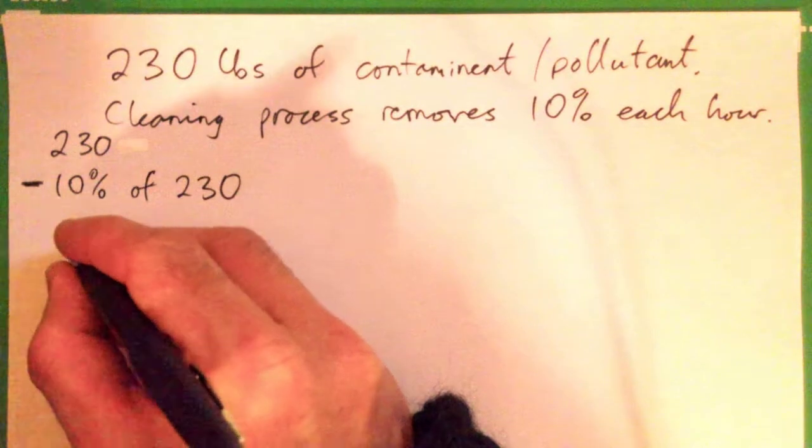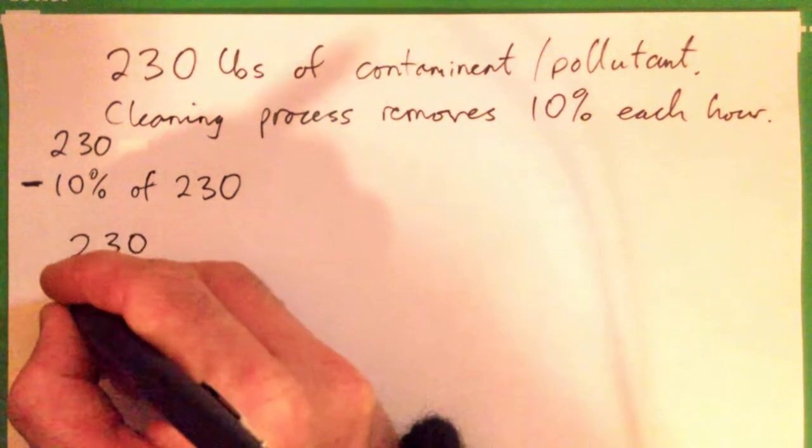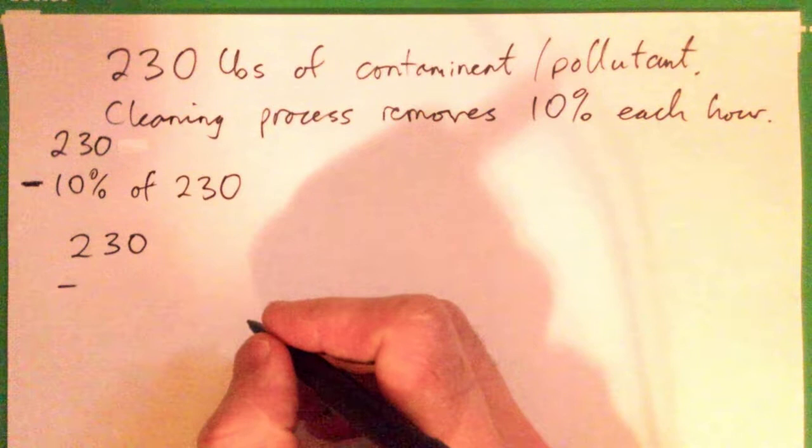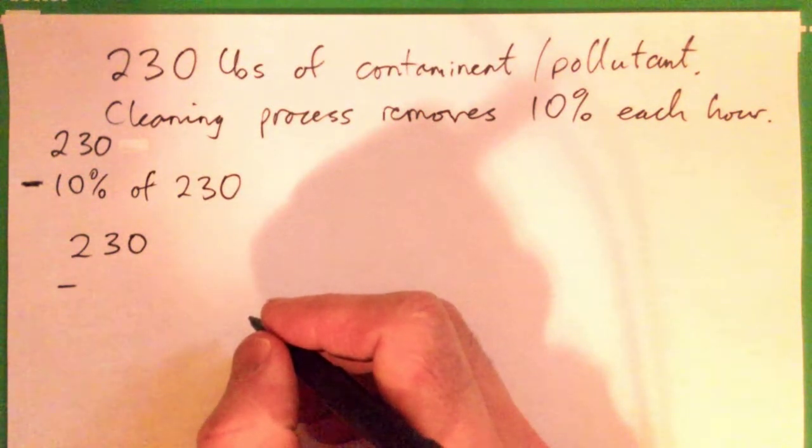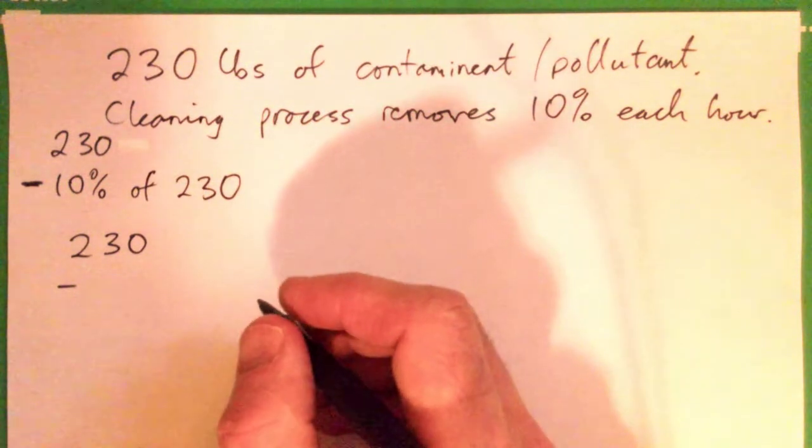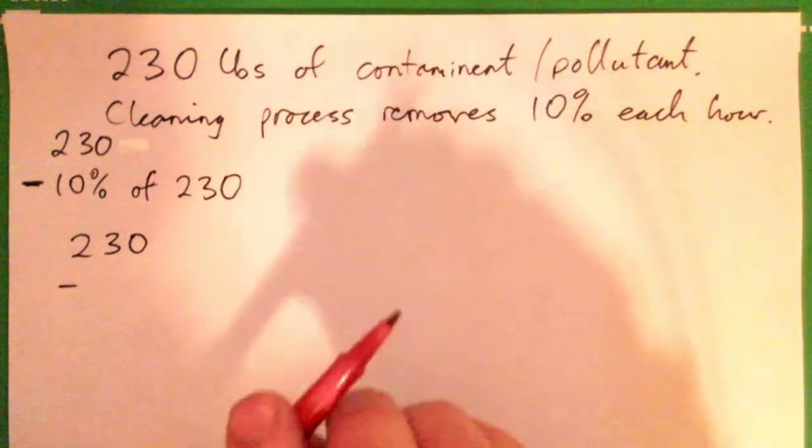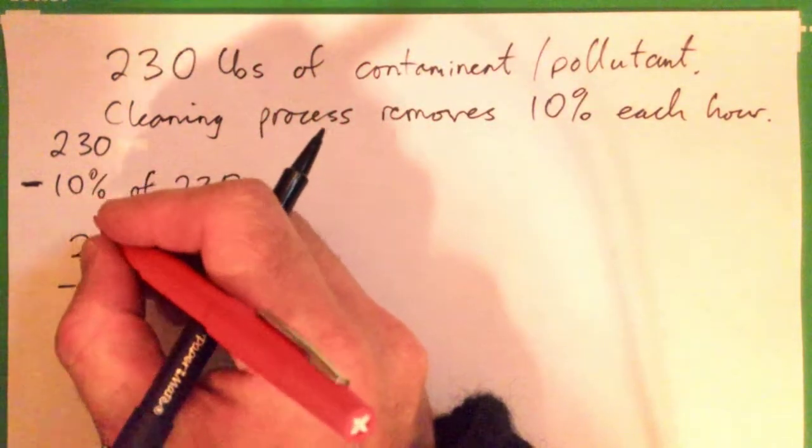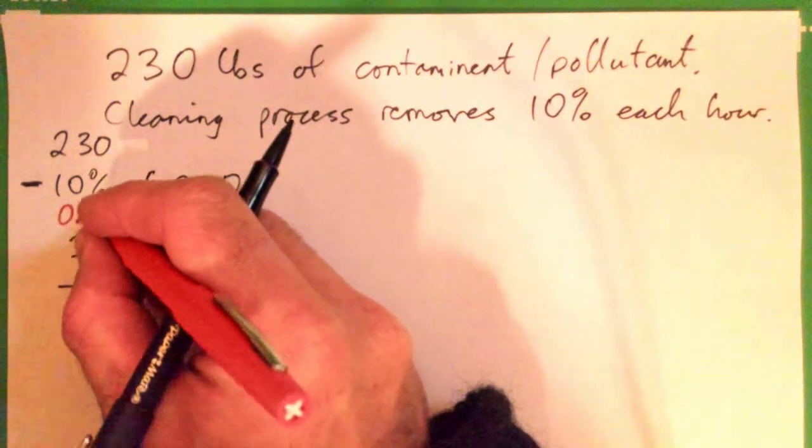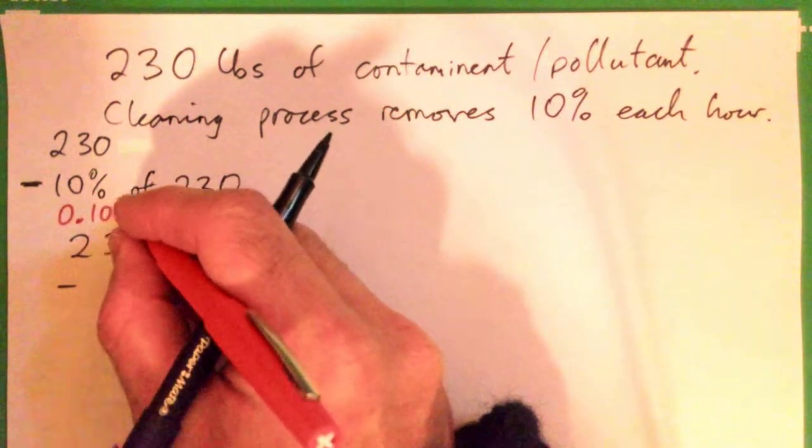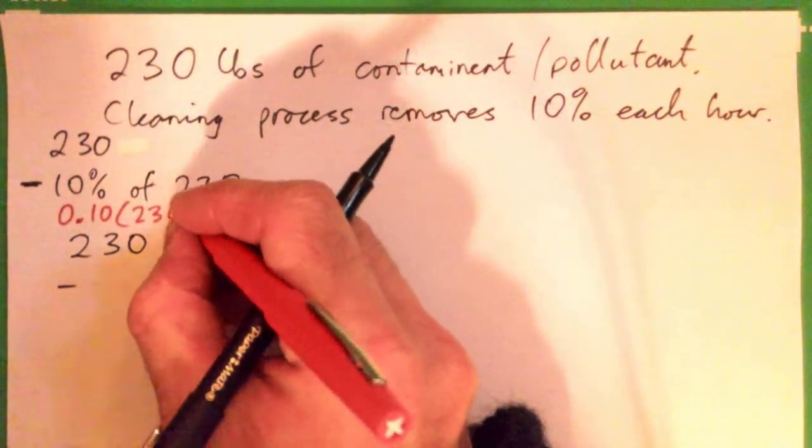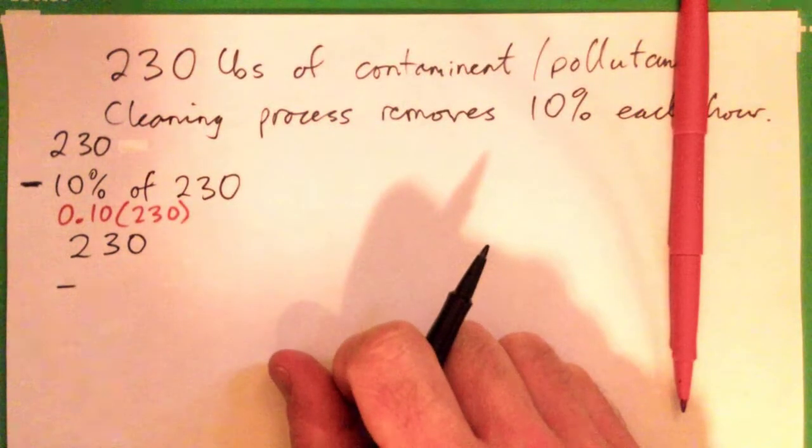So what do we get for 10% of 230? 10% as a decimal is 0.10. Of means multiply. Multiply it by 230 and that gives us 23. Lovely.